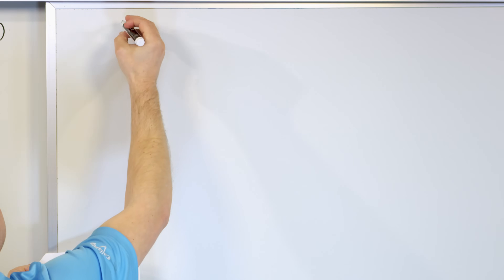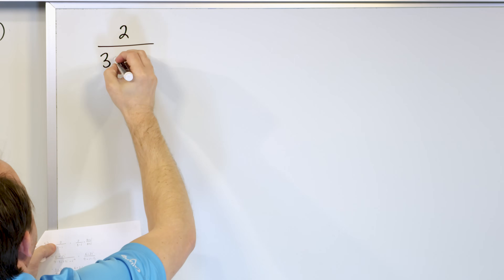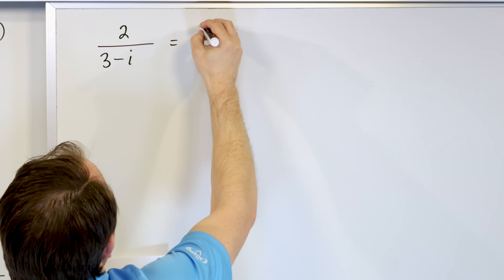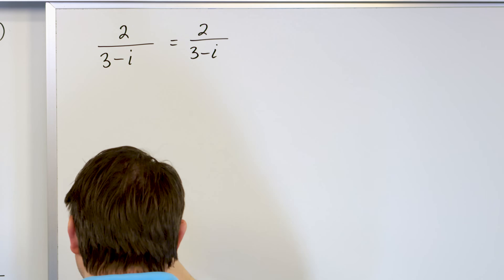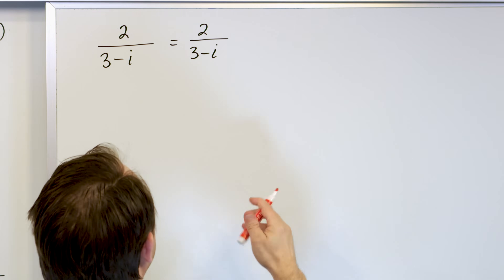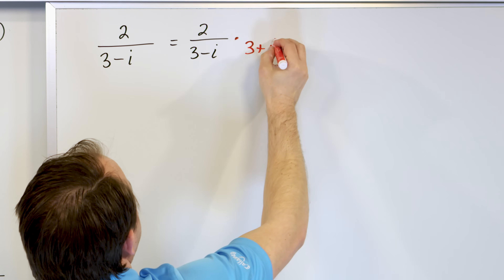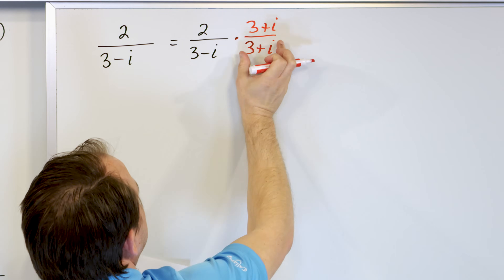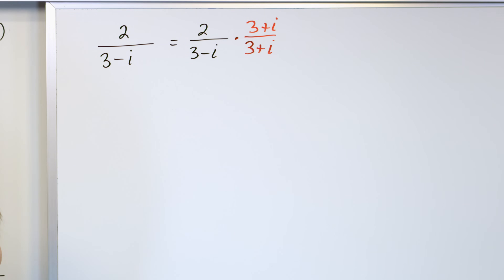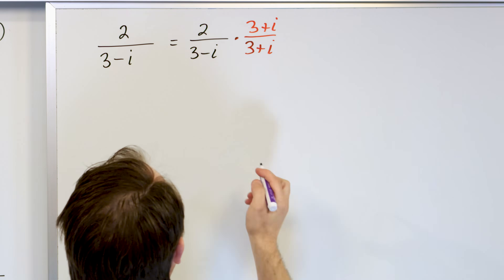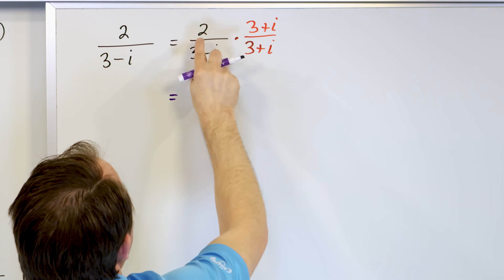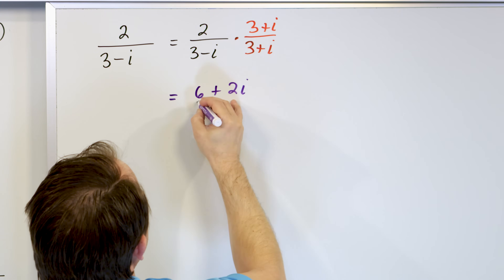Next problem — this is no harder than the last one. What if we have two divided by three minus i? There's not much to do in the numerator or denominator, so we just want to get rid of the imaginary number in the bottom. We multiply by the conjugate: three plus i over three plus i. Two times three is six, and two times i is two i — that's the numerator.